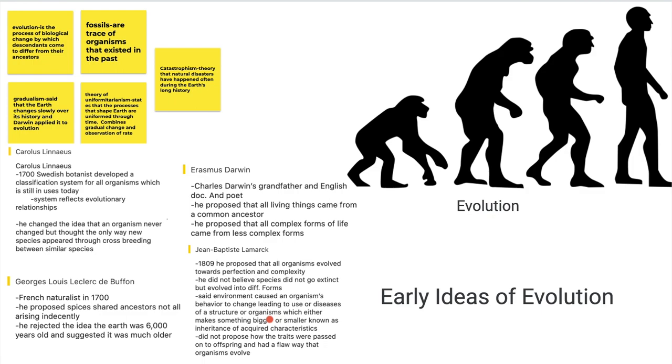Welcome to 5-Minute Explained, and today we'll be learning about early ideas of evolution. Now there are going to be a few people we're going to cover. We're going to cover Cornelius Linnaeus, George Louis de Buffon, Erasmus Darwin, and Jean-Baptiste Lamarck.